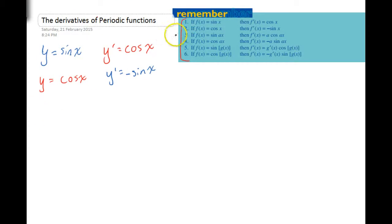Now, we're going to move on to rule three here. I'll just jump back and forth between y and f of x. They're the same thing. If f of x equals sine ax, f dash x equals a cos ax.